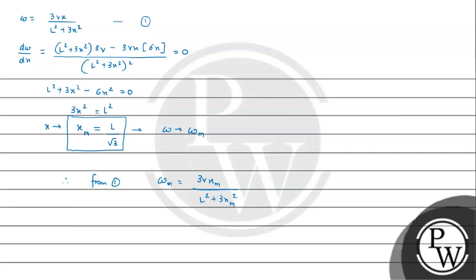So here now we'll just substitute values. It will be 3V times X_M which is L by root 3, divided by L square plus 3 times L square by 3. So 3 and 3 will cancel.